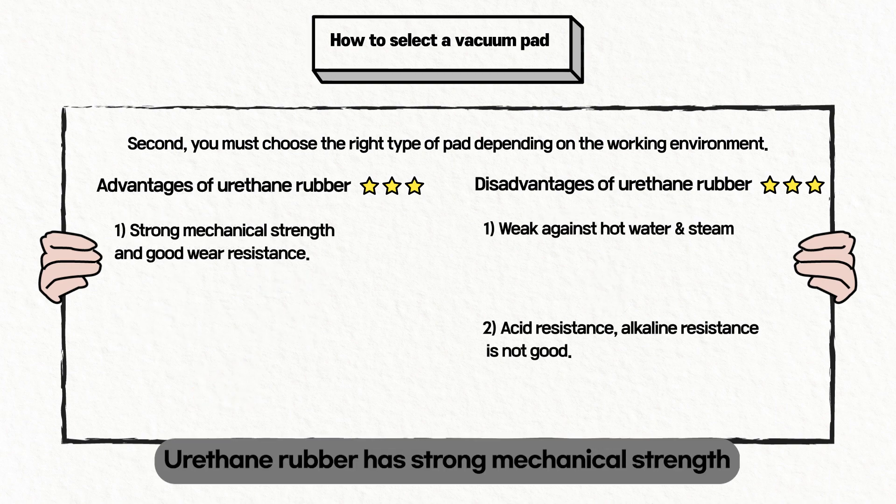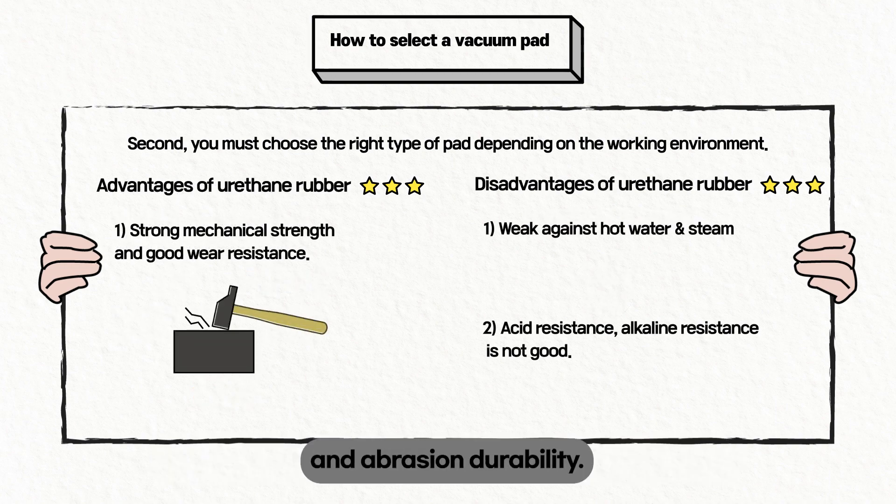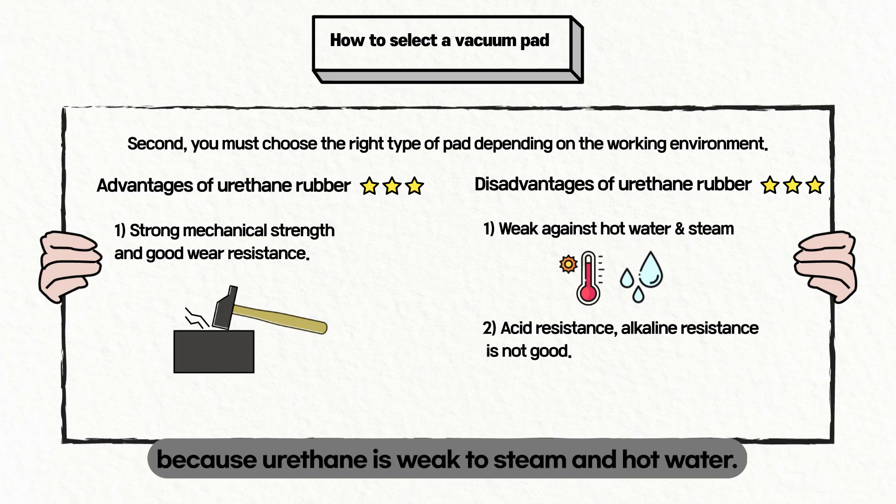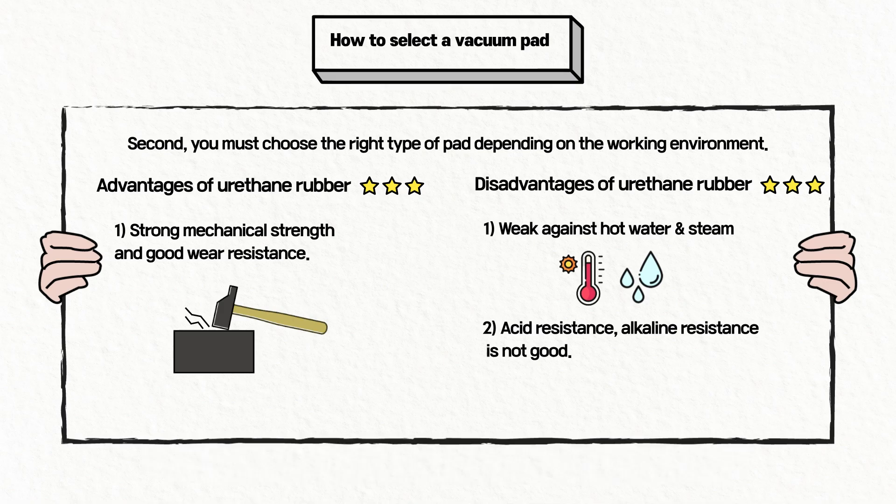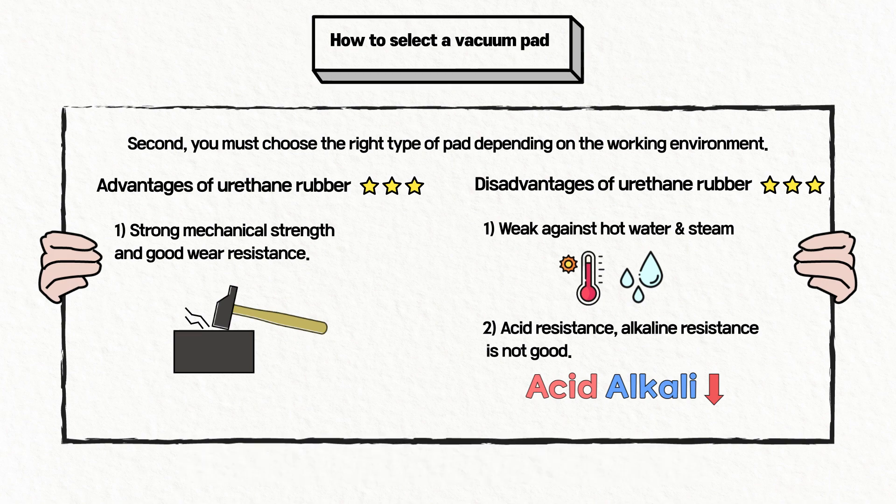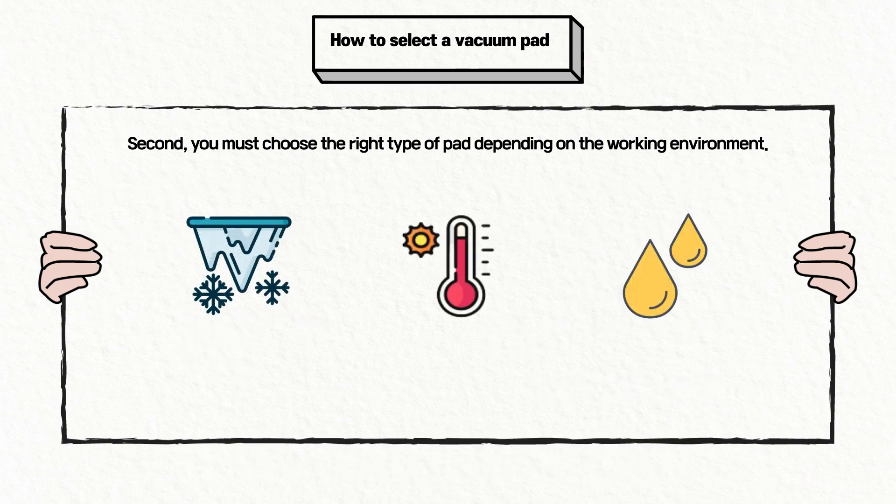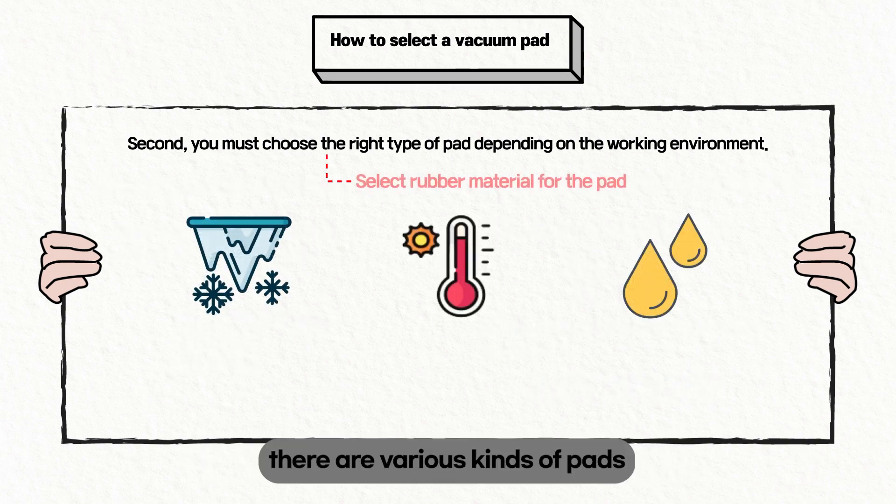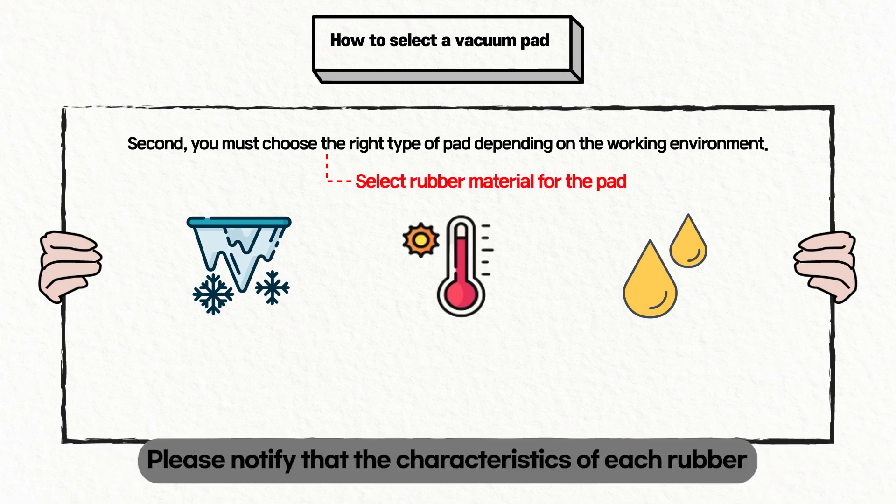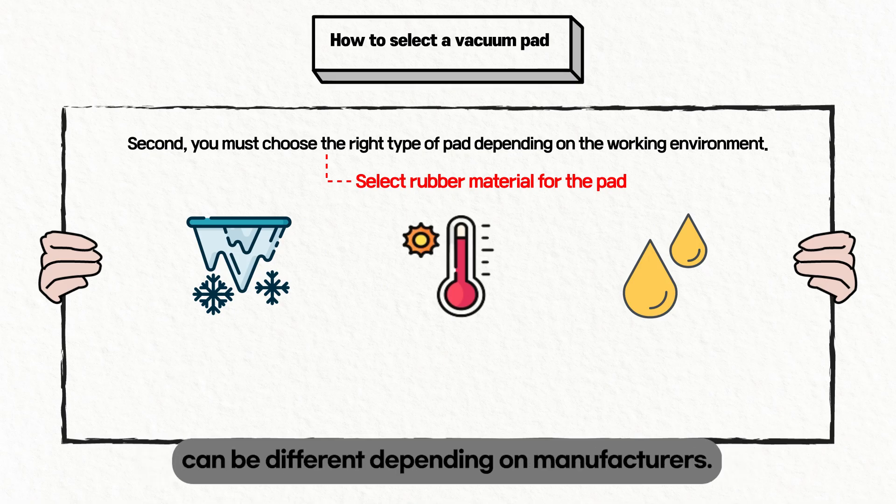Urethane rubber has strong mechanical strength and abrasion durability, but is inappropriate in hot and humid environments because urethane is weak to steam and hot water. Also, it is vulnerable to acidity and alkalinity. As I explained, there are various kinds of pads depending on various materials and working environments. Please note that the characteristics of each rubber can be different depending on manufacturers.